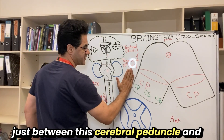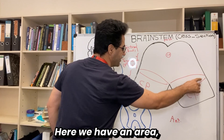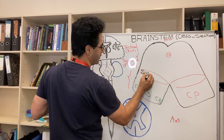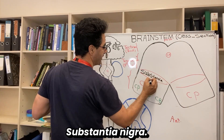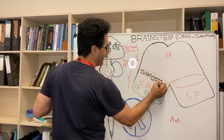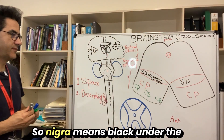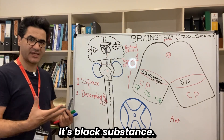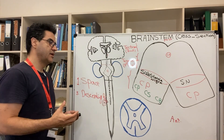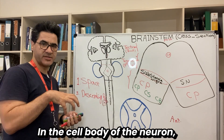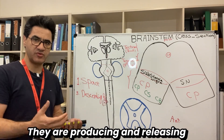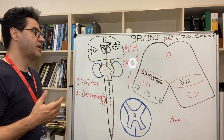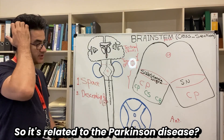Just between the cerebral peduncle and the tegmentum, there is an area called the substantia nigra. 'Nigra' means black — under the microscope it appears black, which is why it's called the substantia nigra or 'black substance.' It contains lots of neurons whose cell bodies produce and release dopamine. If these neurons fail to work and cannot release dopamine, we will suffer from Parkinson's disease. So the substantia nigra is directly related to Parkinson's disease.